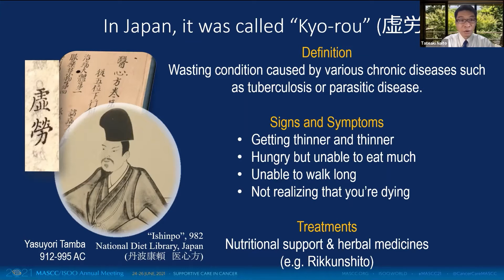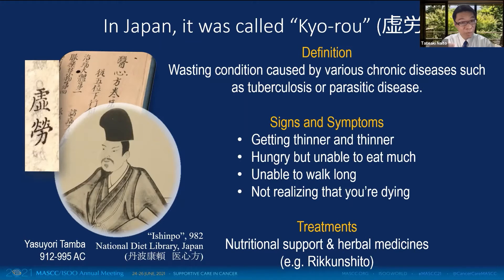The author of an old book from the 10th century showed a clinical picture of his kyoro patient who was getting thinner and thinner, hungry but unable to eat much, unable to walk long, and did not realize that he was dying until the end of life. This is exactly what we see in patients with cancer cachexia today.